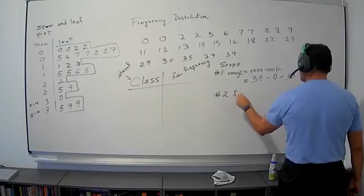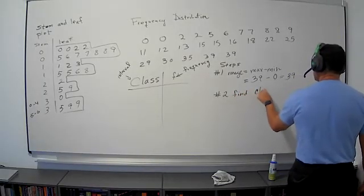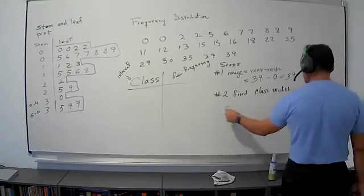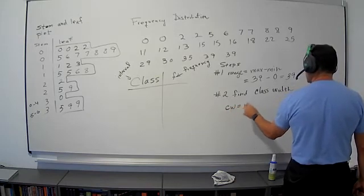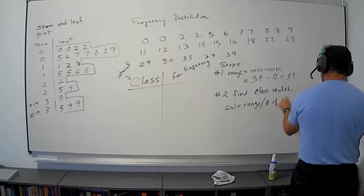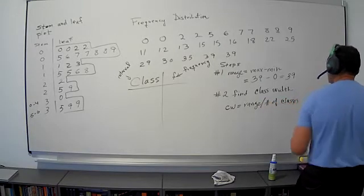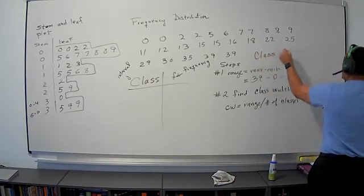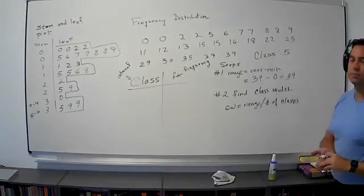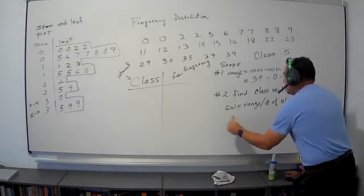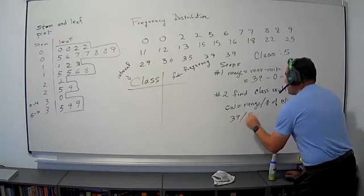Number two: find class width. Class width equals range divided by the number of classes. But I haven't told you how many classes I want. I will tell you that this problem wants five — we want five classes. So what happens when I take 39 and divide that by five?